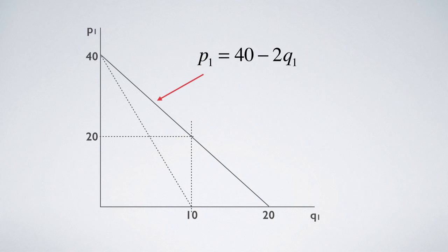When cost is 0, the optimal price is at the middle of the demand curve. For this example, Q1 equals 10, and P1 equals 20. Seller 1's profit is 200.